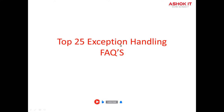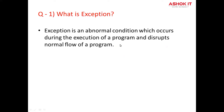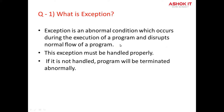Today we are going to discuss top 25 exception handling frequently asked questions. What is exception? An exception is an event which occurs during the execution of a program that disturbs the normal flow of the program instructions. When an error occurs within a method, the method creates an object and hands it to a runtime system. If you are not handling this exception properly, our program will get terminated abnormally.